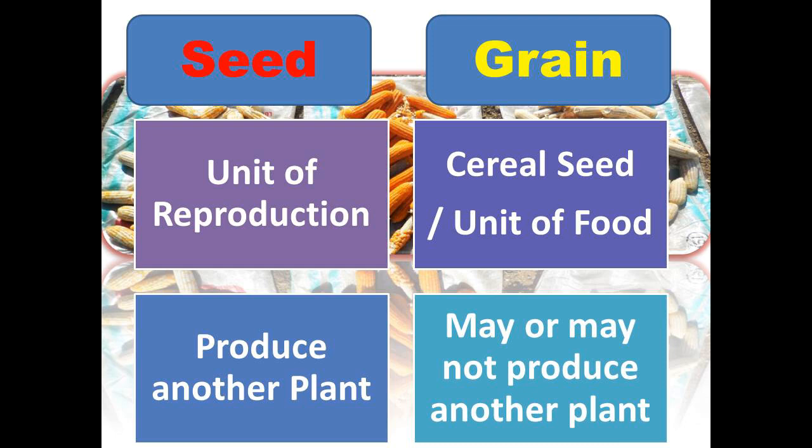Seed is capable of producing another plant. As we sow it, it germinates, establishes into the seedling, and the next whole generation we can get from the seed. But in case of the grain, it may or may not be used to reproduce the next plant. Because in case of the cereal seed, which is called grain, we can use it as food, or we can also use it for sowing purposes.